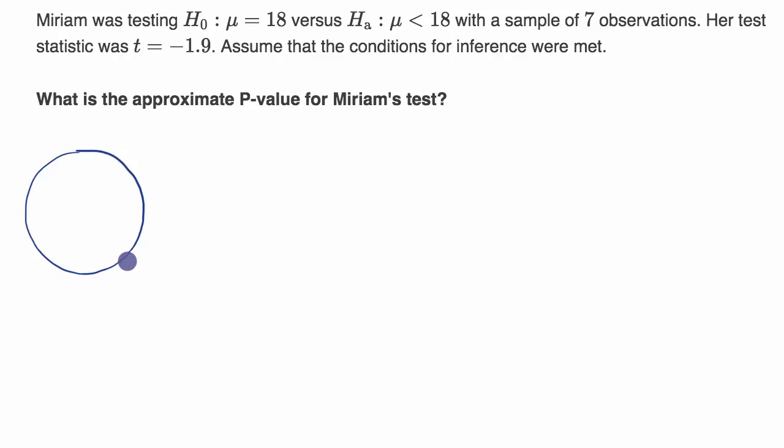So there's some data set, some population here, and the null hypothesis is that the true mean is 18. The alternative is that it's less than 18. So to test that null hypothesis, Miriam takes a sample. Sample size is equal to seven.